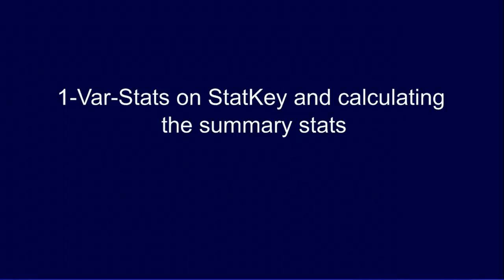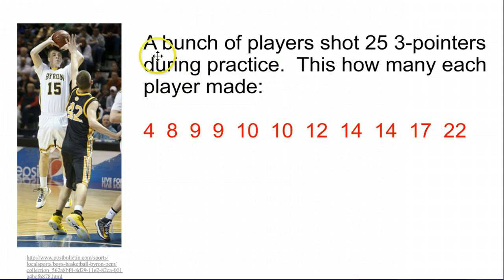We're going to use an online calculator called StatKey, an online simulating tool, to calculate summary statistics of one variable stats. Imagine a situation where you have a bunch of players who shot 25 three-pointers during practice. And this is how many each player made. So you have all the different numbers. Each of these represents a different player and how many three-pointers that they made out of 25.